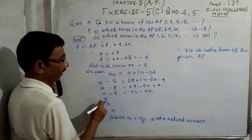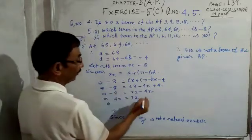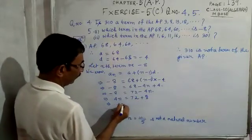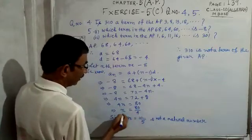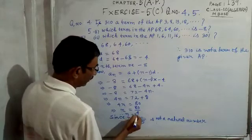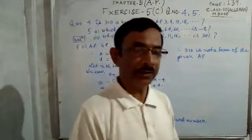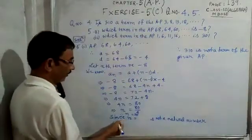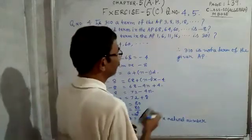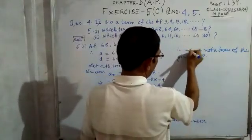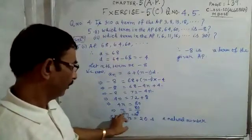Bringing 4n to the left and −8 to the right: 4n = 72 + 8 = 80, so n = 80 ÷ 4 = 20. Since n = 20 is a natural number, −8 is a term of the given AP.